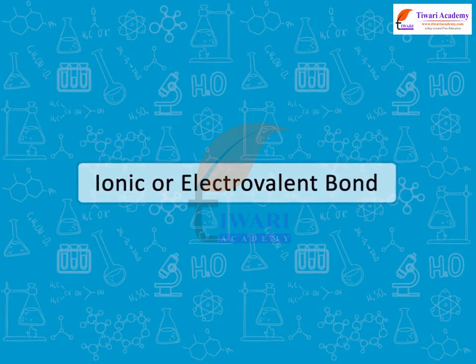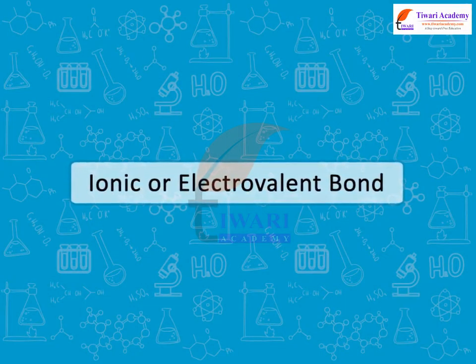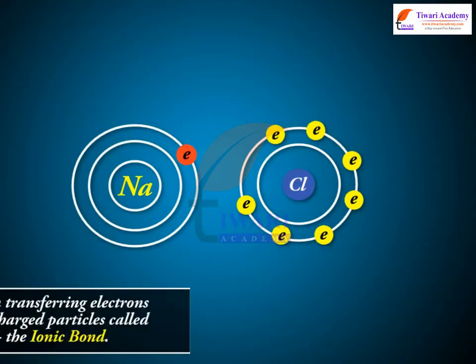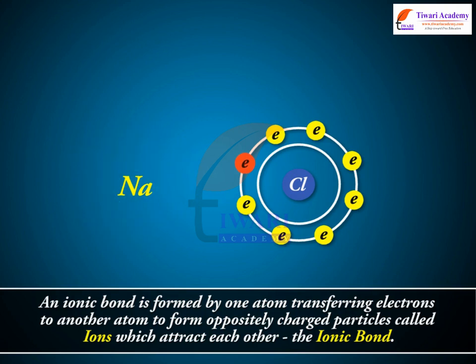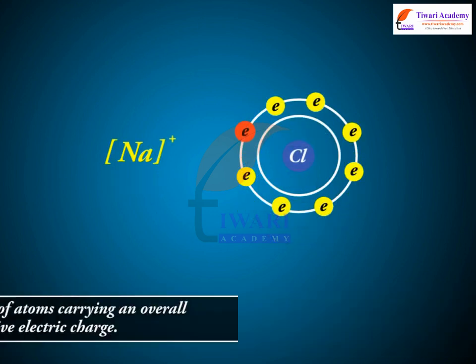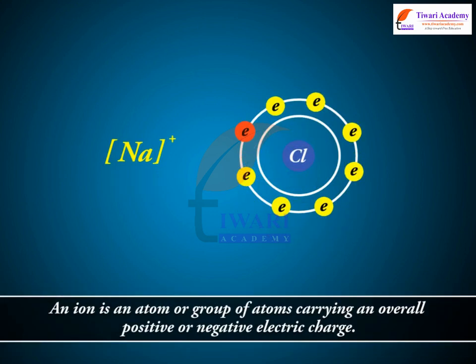Ionic or Electrovalent Bond. An ionic bond is formed by one atom transferring electrons to another atom to form oppositely charged particles called ions, which attract each other — the ionic bond. An ion is an atom or group of atoms carrying an overall positive or negative electric charge.